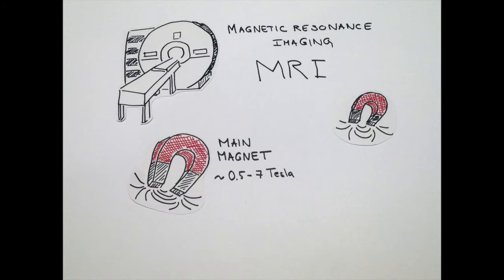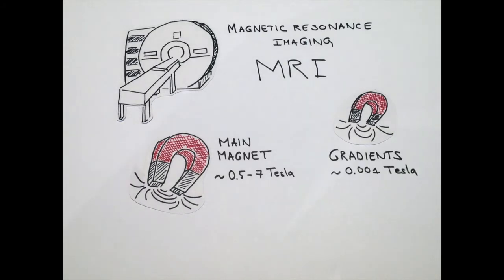Additionally, during an MRI scan we switch on and off weaker magnetic fields, which we call gradients.